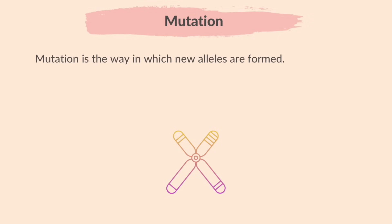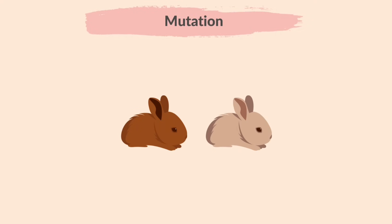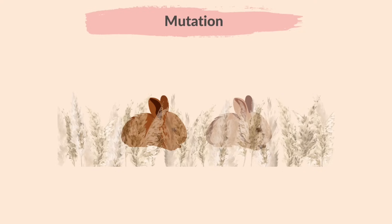Mutation is the way in which new alleles are formed. If the mutation occurs at a particular allele, this allele may be altered, changing how it functions. Remember, an allele is a variation of a gene. For example, let's say a brown-furred population of rabbits has a mutation that leads to lighter-coloured fur, which helps them blend in better with their environment and avoid predators, increasing their chances of survival.